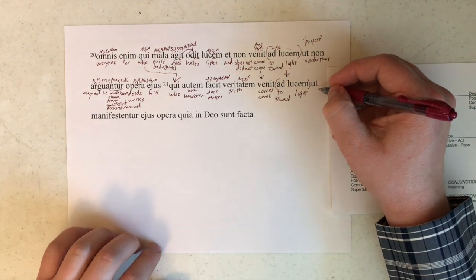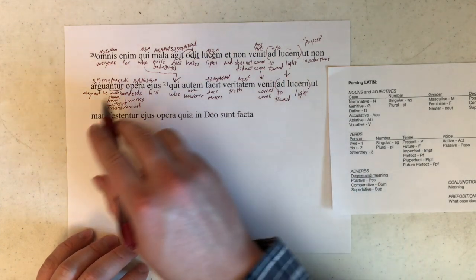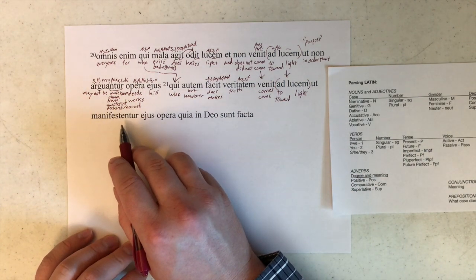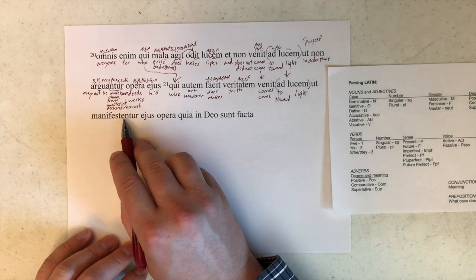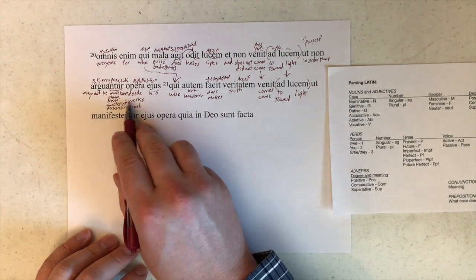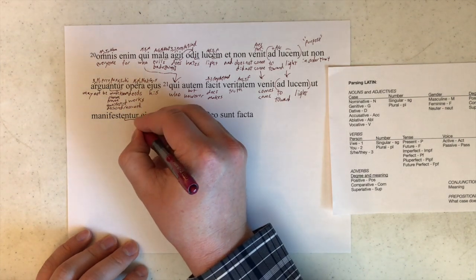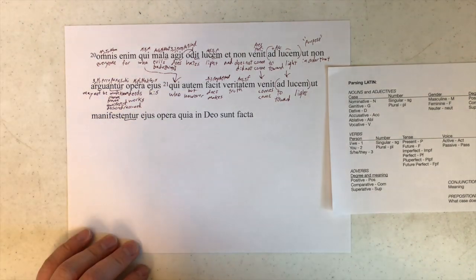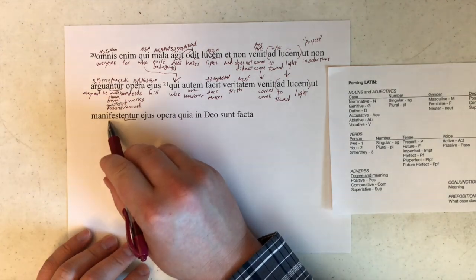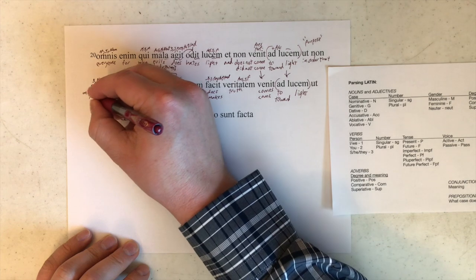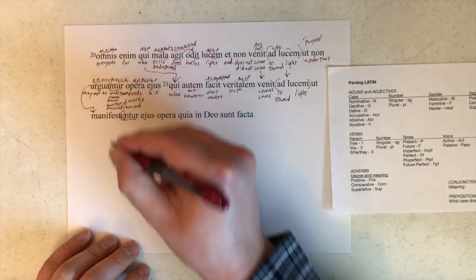Ut. So another purpose or another result clause. Taking a look ahead at manifestentor. Manifesto manifestare. So e right there tells us that this is a subjunctive. I'm gonna have to parse it underneath because of how many arguantor had. So enter, actually doing, I think the only difference is conjugation. So while this is a third, this is a second. So I'm just gonna pull that down actually. Same exact form.